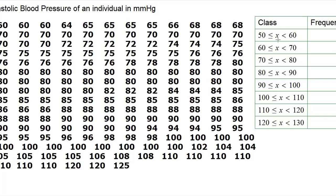What I'm doing is indicating that 50 belongs in this particular class but 60 doesn't — 60 goes in the next class. Now we are going to write the frequencies, and by frequencies we mean the counts. Between 50 and 59 we have only one observation, so we record a frequency of one.